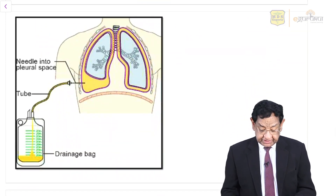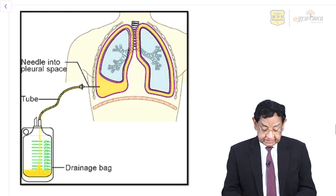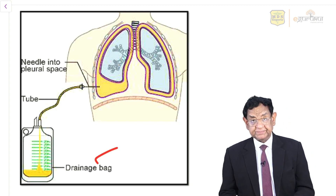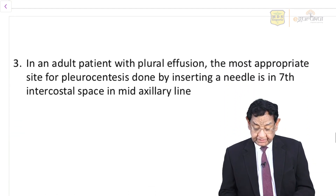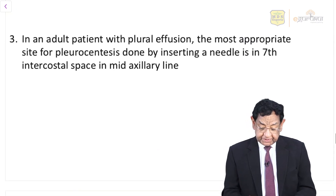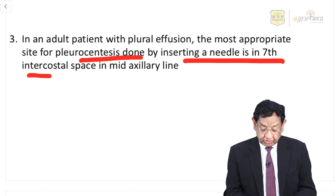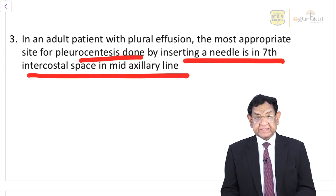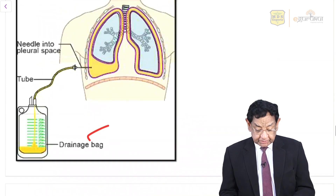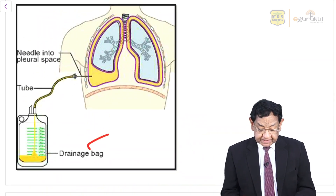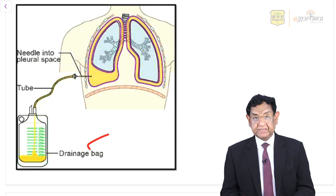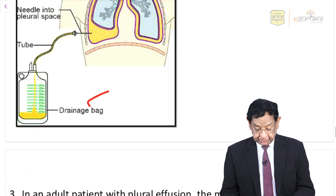This is a classic drainage bag. In the pleural fluid, we put a needle and the fluid comes into the drainage bag. In an adult patient with pleural effusion, the most appropriate site for pleural drainage is to put the needle in the fifth intercostal space in the mid-axillary line. Similarly, it is the mid-axillary line, seventh intercostal space where the needle is put.